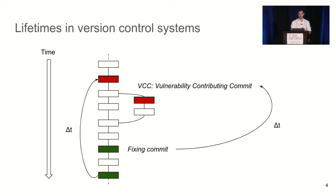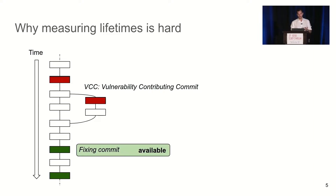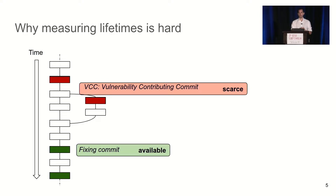When talking about a version control system, this time is between the vulnerability contributing commit (VCC) and the fixing commit. Where there are multiple VCCs and fixing commits, we take the time between the first VCC and the last fixing commit. The challenge is that while fixing commits for published vulnerabilities are almost always available in CVE entries or security advisories, we don't have information on the vulnerability contributing commits except for a small subset identified through manual efforts.